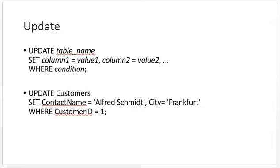UPDATE is used to update a table. You indicate the column you want updated and the values to be updated in those columns. For example, to update the Customers table to set the ContactName to Alfred and the City to Frankfurt where the CustomerID is 1 — the WHERE condition specifies which record gets updated. The syntax for the UPDATE statement is: UPDATE table name, SET the values, WHERE the condition.